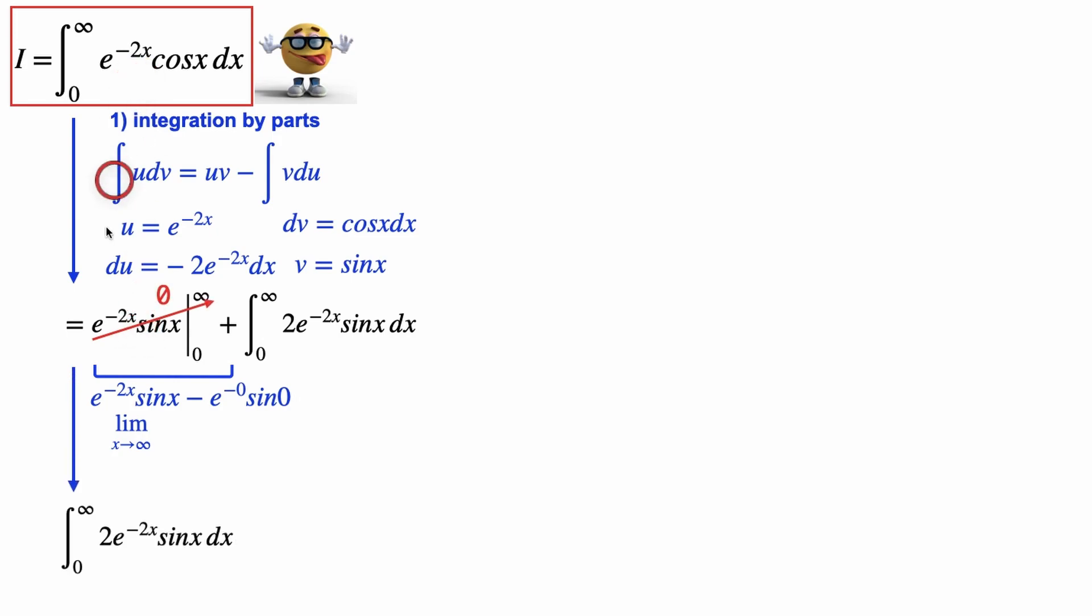So our integral that we're aiming to evaluate becomes the integral of 2 times e to the negative 2x sin x. Now it doesn't look like we did much here. We just exchanged a cosine for a sine, but here's the tricky part.